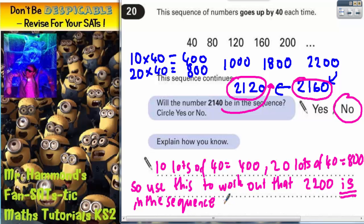And then count backwards in 40s to see that 2,140 is not there.